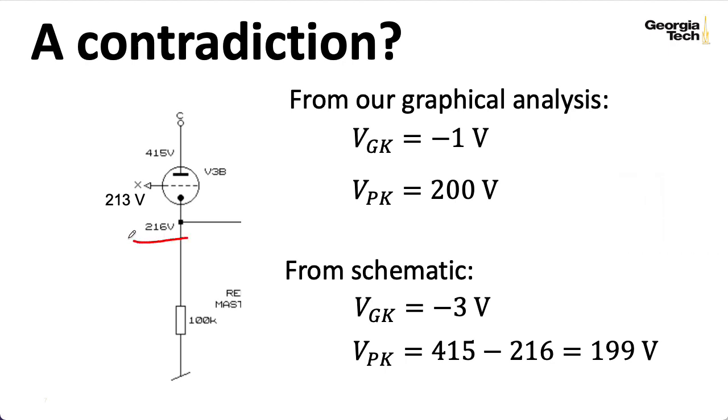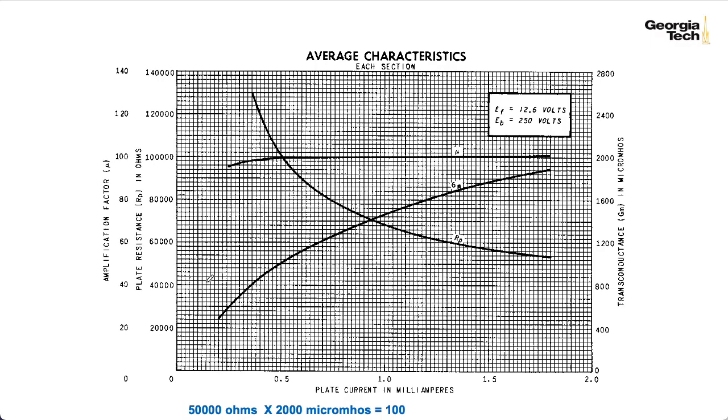Now, regardless of whether you assume this is 216 volts or 214 volts, the plate current here is still around 2.1. If I assume that's the value I need to use, that actually puts me way out over here on the graph of the small signal parameters. It's beyond where I actually have lines. But, if I imagine extrapolating these out a little bit, I could imagine that mu is 100, no big surprise there, and that rp is something like 50k.